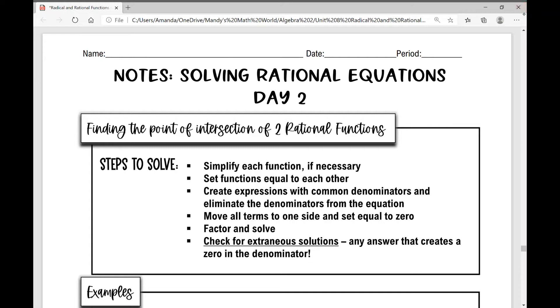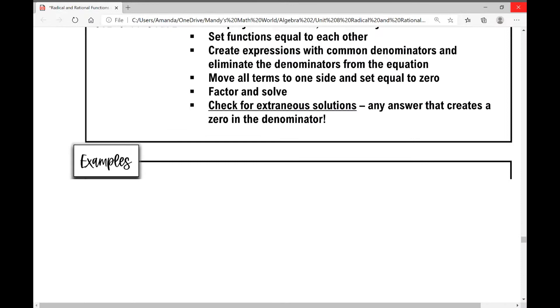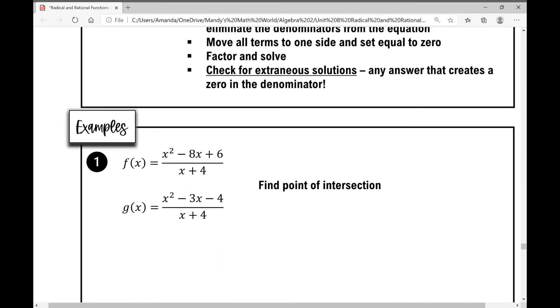Today we're going to be finding the point of intersection of two rational equations. So we do many of the same steps as yesterday and here are what you can refer to as we're moving along through these examples. In the first example we have the function f of x and the function g of x and we're asked to find the point of intersection.